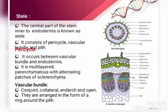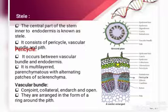The pericycle is located between the vascular bundle and the endodermis. The vascular bundle in dicot stem is described as conjoint and collateral.